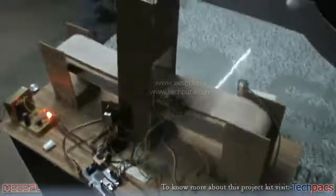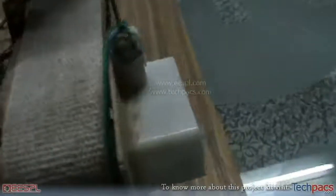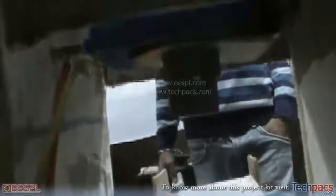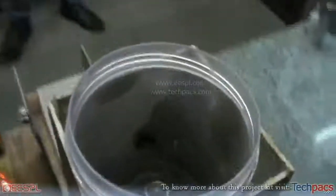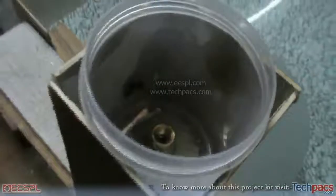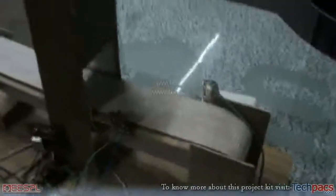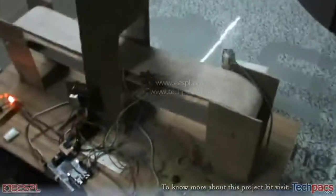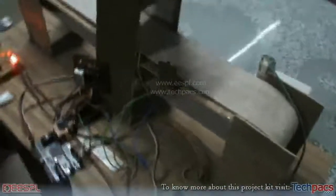What this project does is, as you can see, there is a conveyor belt driven by this DC geared motor and there is a solenoid valve here which is used to pour liquid that is filled into this container into the bottles that will be placed here on this conveyor belt.